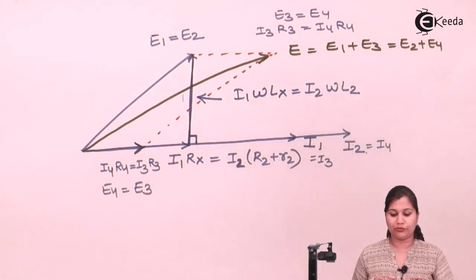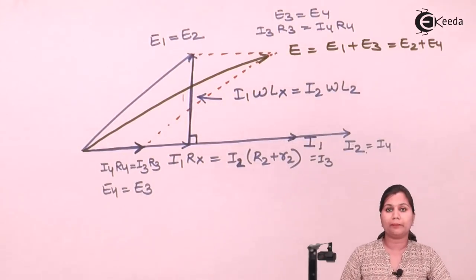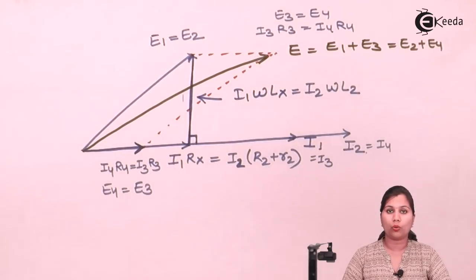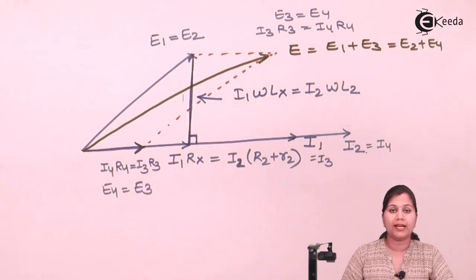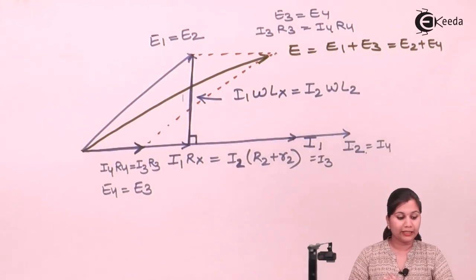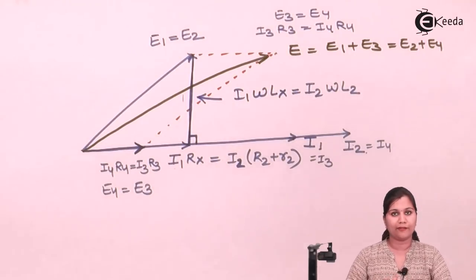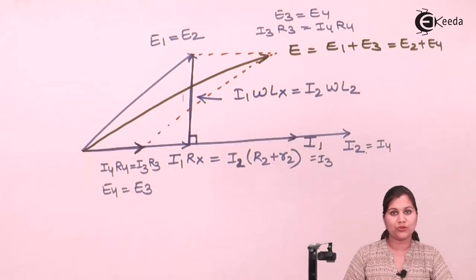In this video, we have studied the Maxwell inductance bridge, which is used for the measurement of unknown inductance by comparing it with a known standard inductance. This bridge is the most basic and simple bridge used for the measurement of inductance. We studied its circuit diagram, its balance equation, the value of the unknown inductance Lx, and its phasor diagram. I hope this topic is now clear to you. Thank you.